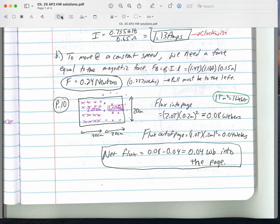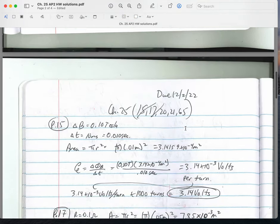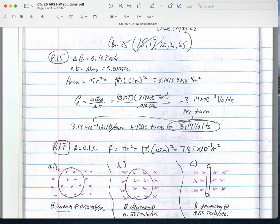For problem 15, you were told you had a thousand turns in a solenoid. It was two centimeters in diameter in a magnetic field that changes from 0.1 Tesla to zero Tesla in ten milliseconds. The axis of the coil is parallel to the field, so that really does mean it's a maximum effect, that area and B are co-stated.